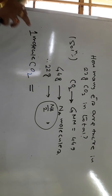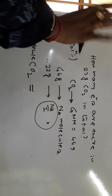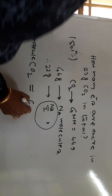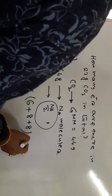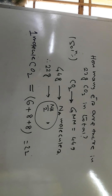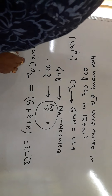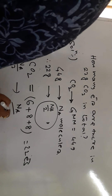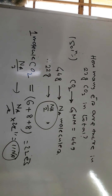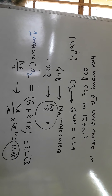One molecule of CO2 has one carbon atom and two oxygen atoms. Carbon has 6 electrons and each oxygen has 8 electrons. So total electrons per CO2 molecule = 6 + 8 + 8 = 22 electrons. Therefore, NA/2 molecules will have NA/2 × 22 = 11NA electrons.